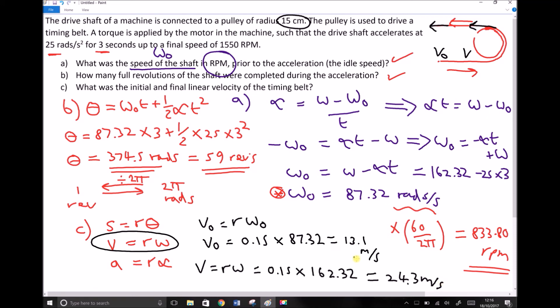So the initial linear velocity was 13.1 meters per second. After the acceleration was complete, the linear velocity was 24.3 meters per second. And that's the solution to part c of our question, meaning we've fully answered each of the points a, b, and c.